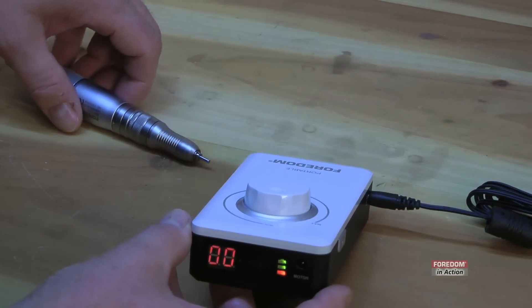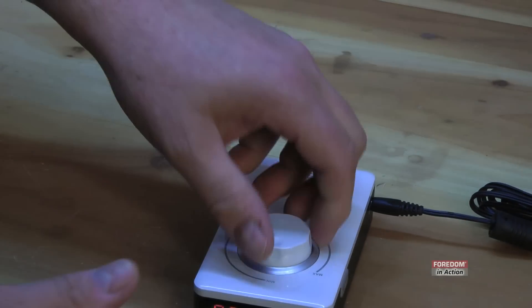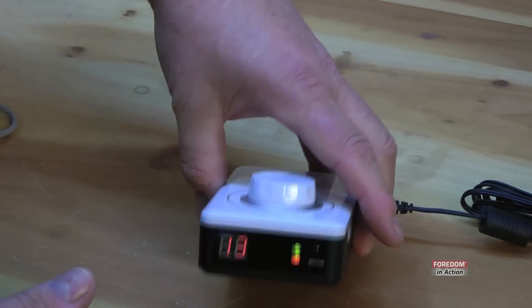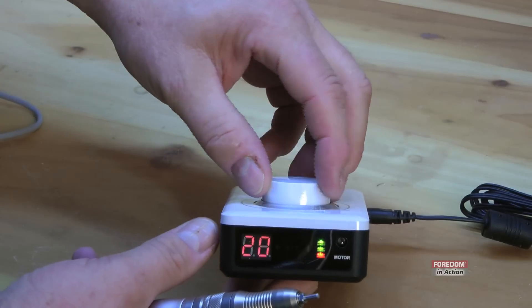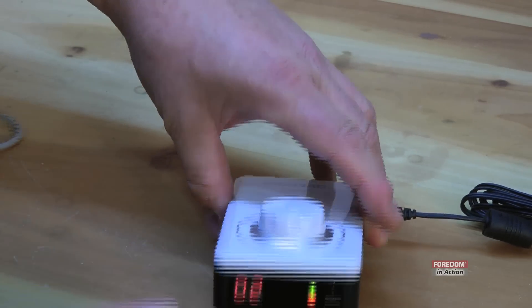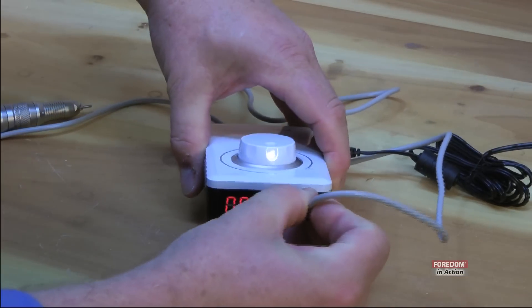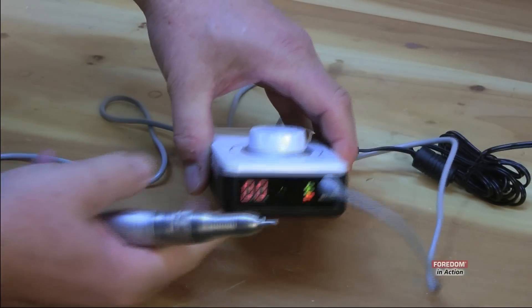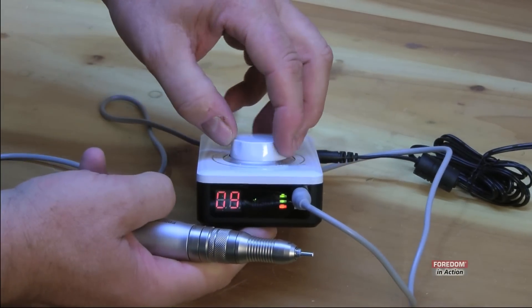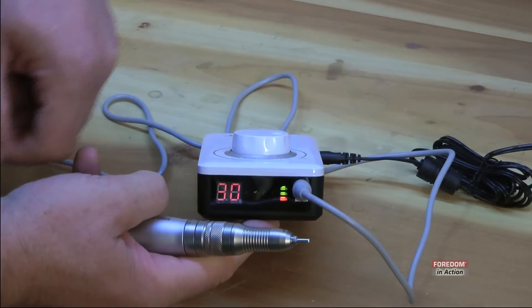Now when it's on, turn on the speed and you can see the digital speed control go up and down. Let's plug the handpiece on and see what it looks like. Now you turn the speed up and you can hear it going. It's now 30,000 RPM.